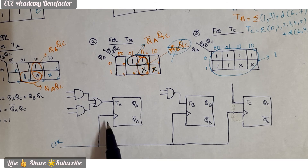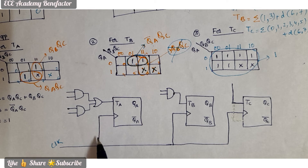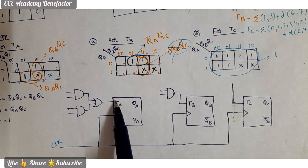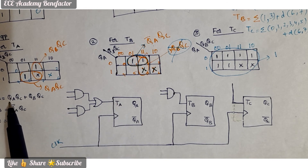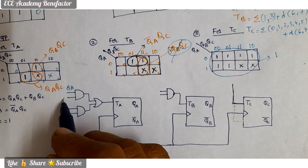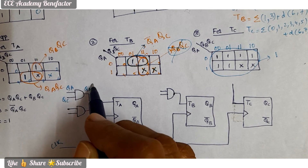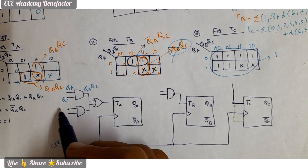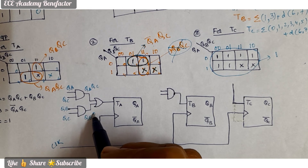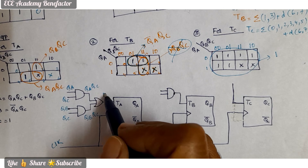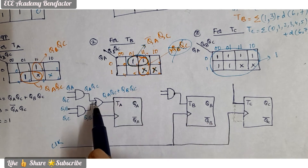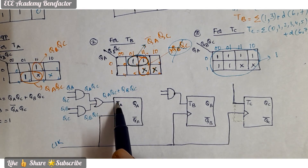The same clock is given to all three flip flops. The TA input requires QA·QC + QB·QC, so QA and QC are ANDed together, and QB and QC are ANDed together. The outputs of these two AND gates are combined through an OR gate, whose output QA·QC + QB·QC is fed to the TA input of the flip flop.